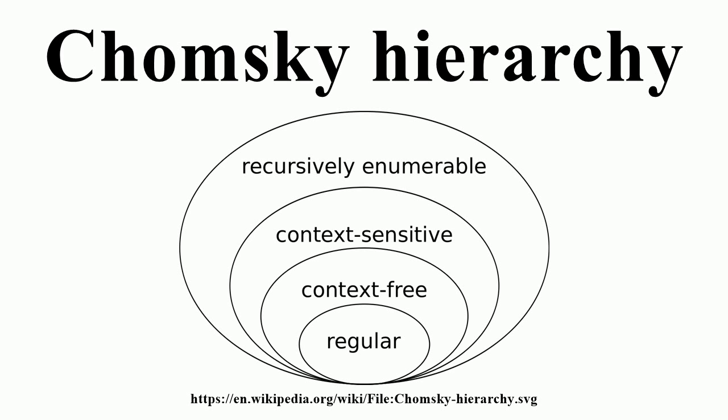Type 1 grammars generate the context-sensitive languages. These grammars have rules of the form with a non-terminal in context, and strings of terminals and/or non-terminals. The strings may be empty, but the middle string must be non-empty. The rule S → ε is allowed if S does not appear on the right side of any rule. The languages described by these grammars are exactly all languages that can be recognized by a linear bounded automaton.